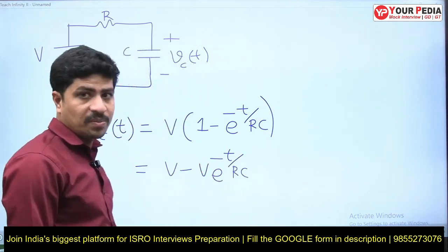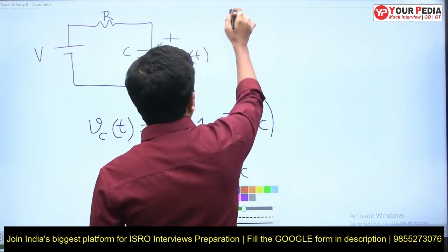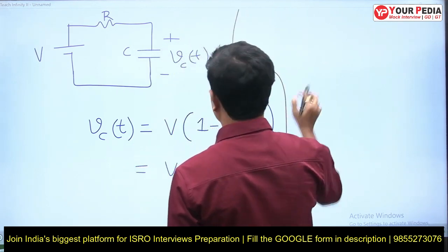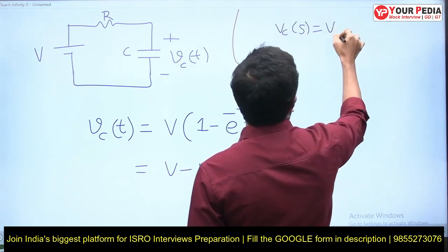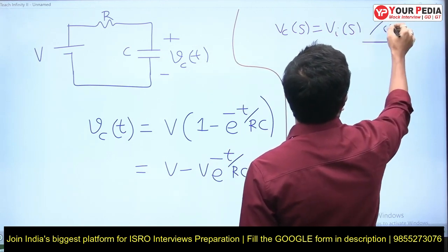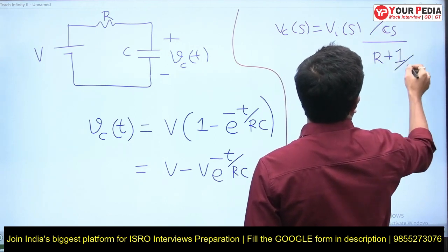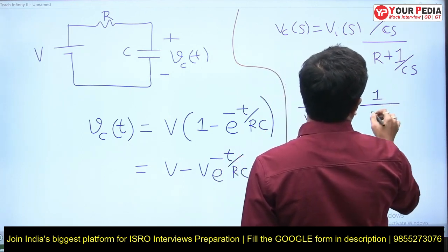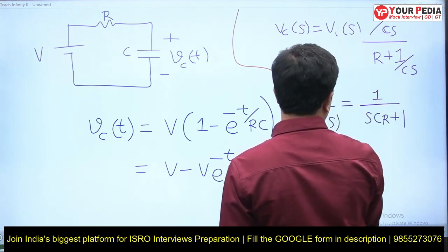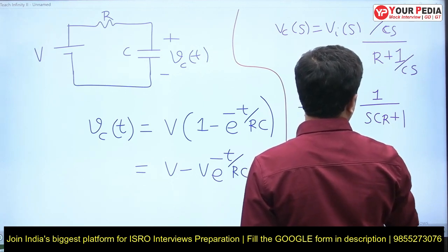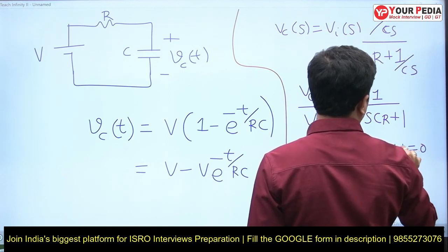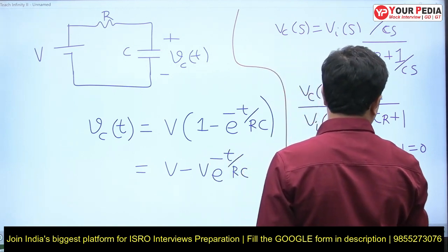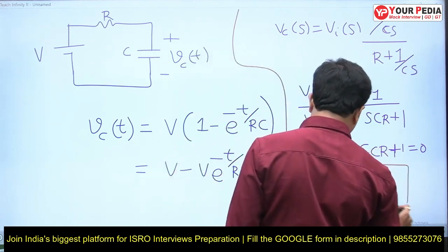Let me find the transfer function for the purpose of explanation. VC(s) = Vi(s) · (1/Cs) / (R + 1/Cs), so VC(s)/Vi(s) = 1/(sCR + 1). The characteristic equation is sCR + 1 = 0. There is a closed-loop pole located at s = -1/RC. So the pole is at s = -1/RC.